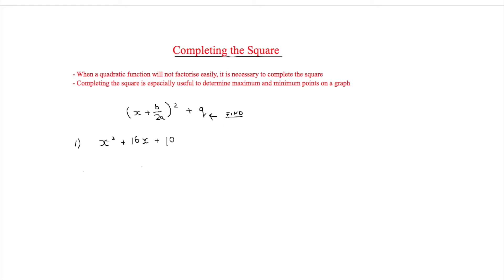The first question we've got is x squared plus 16x plus 10. In this formula x is just x, b is equal to 16 because b is the middle coefficient, and a is equal to 1 because it's the coefficient of x squared. So this is a, this is b, and we don't need c, but if there was a constant term that would be c.